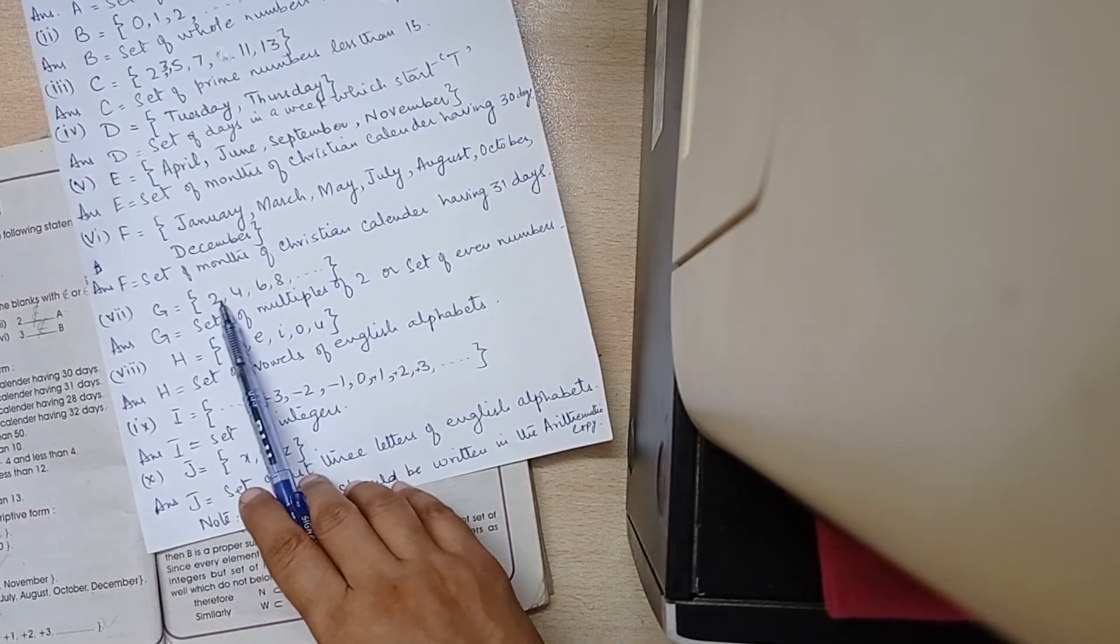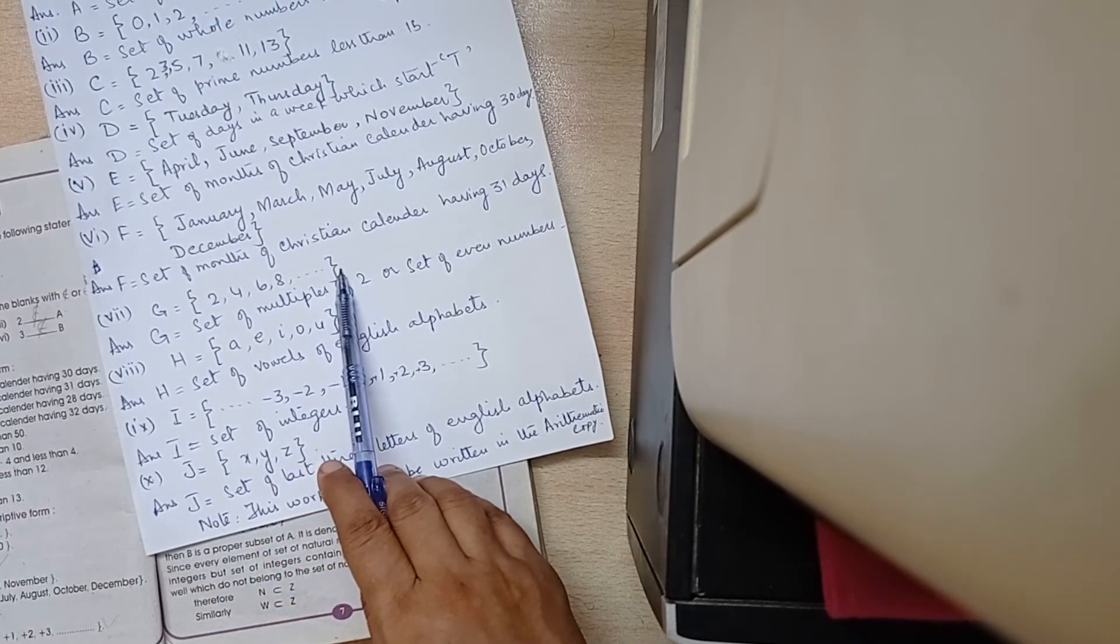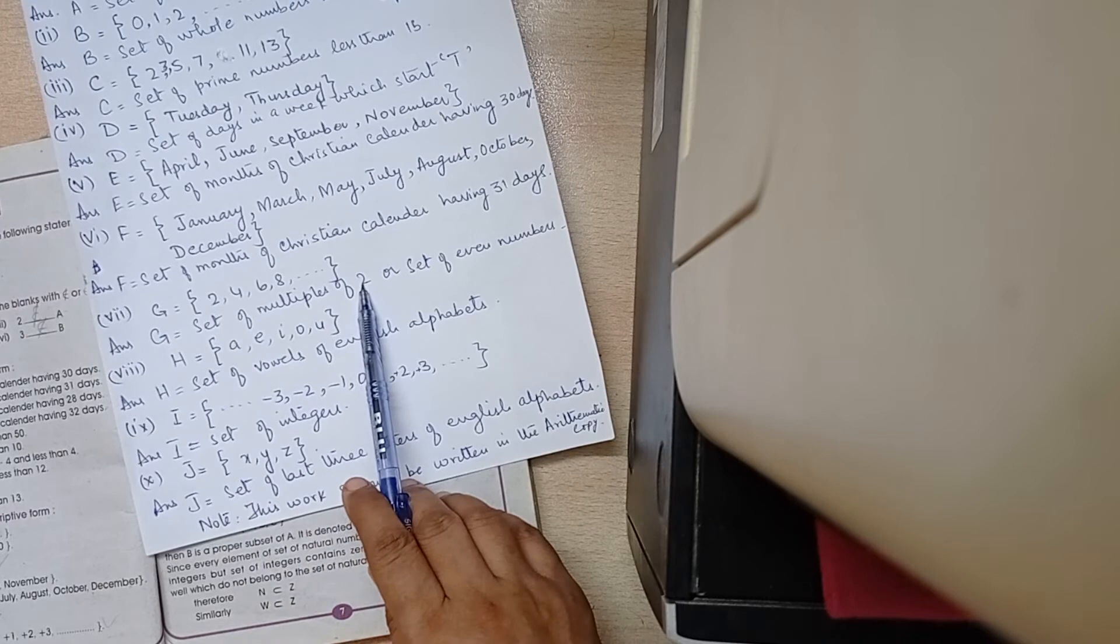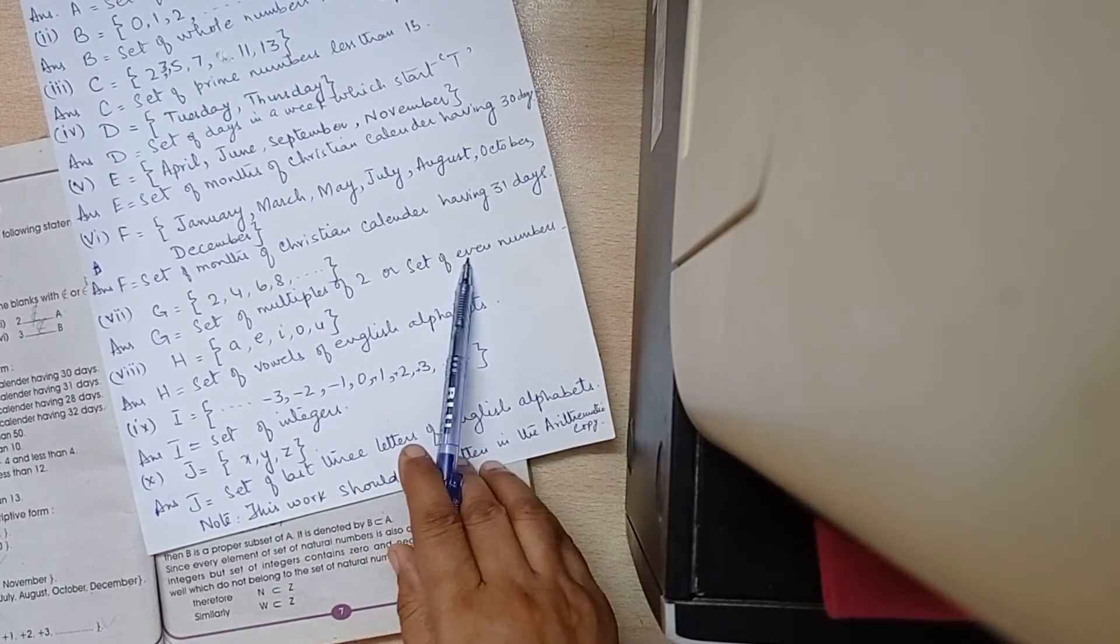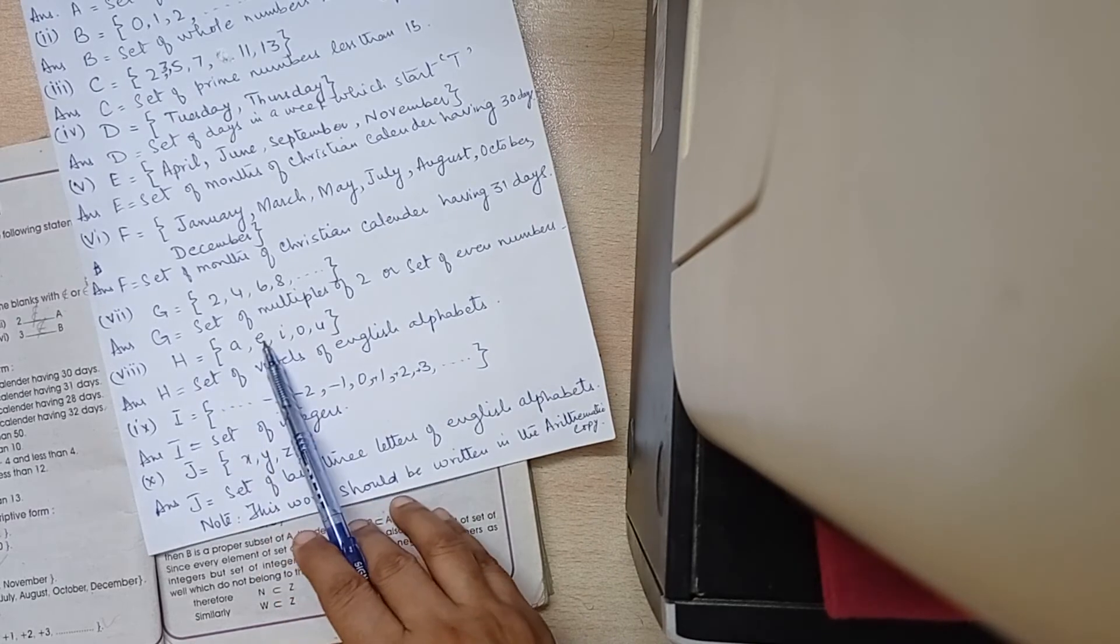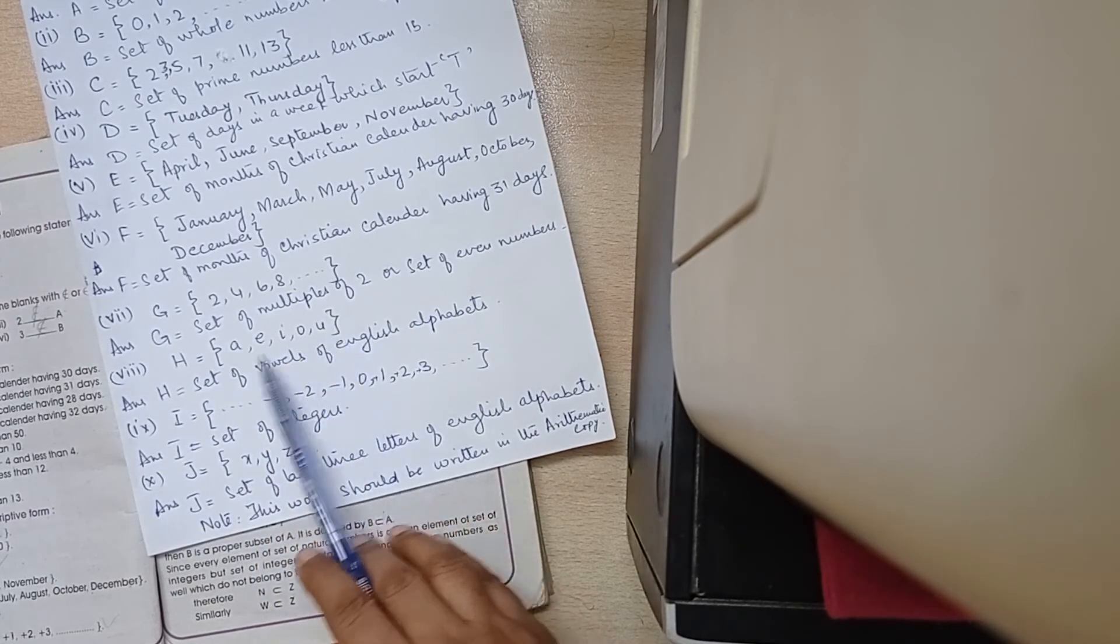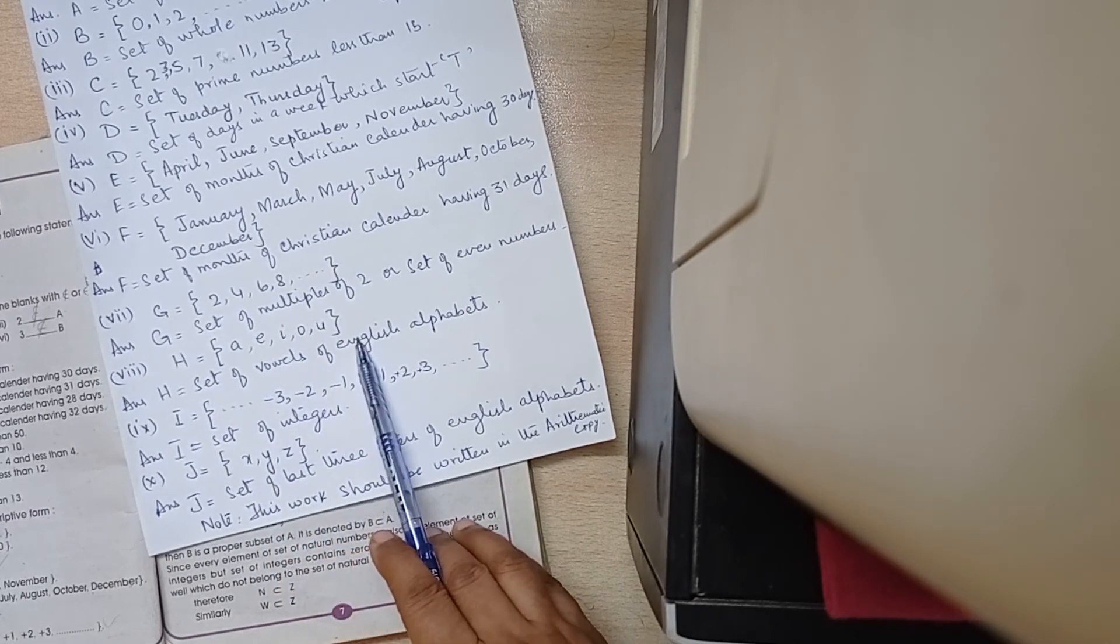G is equal to 2, 4, 6, 8 and so on. Set of multiples of 2 or set of even numbers. H is equal to A, E, I, O, U. Set of vowels of English alphabets.